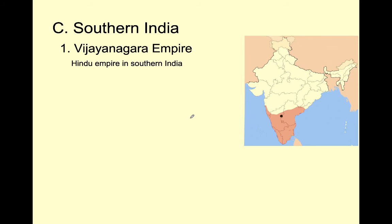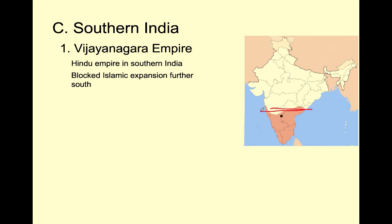That's it for the Islamic world in India. Now let's talk about the part of India that does not become Islamic — southern India. Muslims never conquer the southern part of India. There are many Hindu kingdoms, but we'll focus on one: the Vijayanagara Empire. This empire in the south unites a whole bunch of Hindu kingdoms into one empire. One key thing they do is block Islamic expansion into all of India. As the Sultanate of Delhi tries to conquer more of India, this empire stops them through several battles. As rivals, they prevent Muslims from controlling all of India, and so a large part of India stays Hindu.